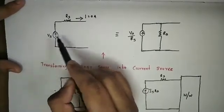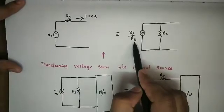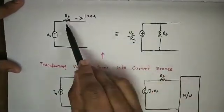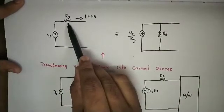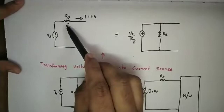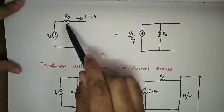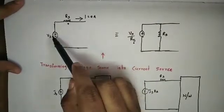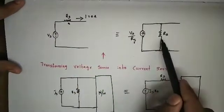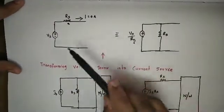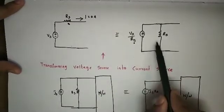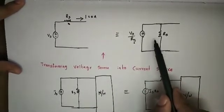We can change a voltage source to a current source. Divide the voltage by the resistance — VS divided by RS gives the equivalent current source. The resistance is placed in parallel. So a practical voltage source can be transformed into a practical current source.